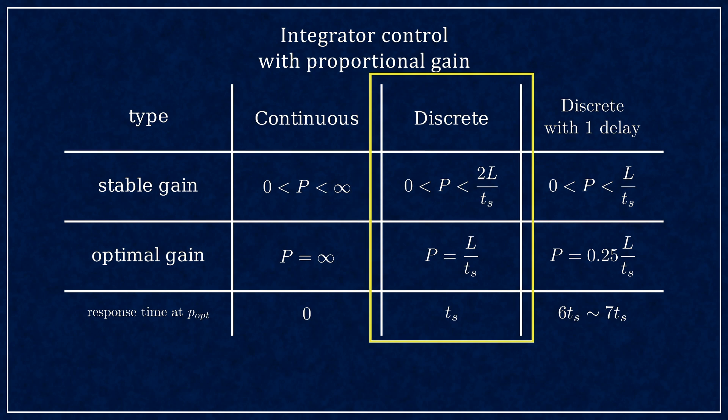In discrete time, just by using sampled control, you impose an upper limit on the gain. There is an ideal gain that drives the system to the reference in a single step.